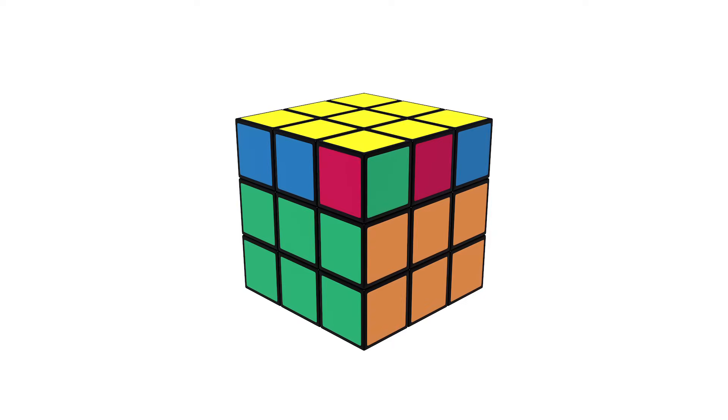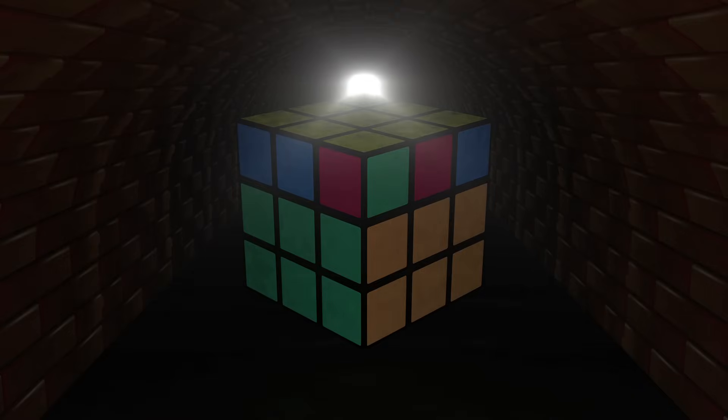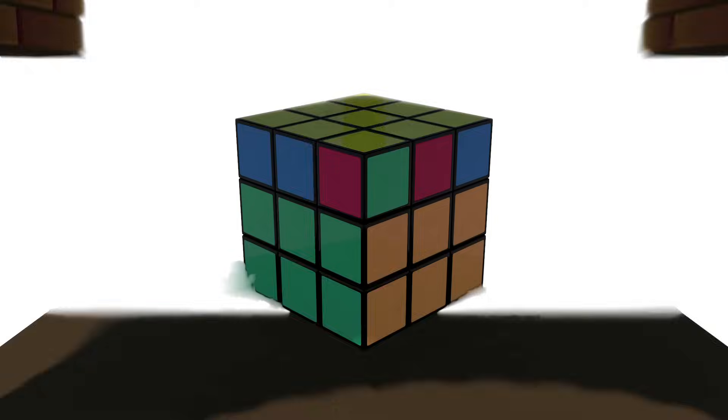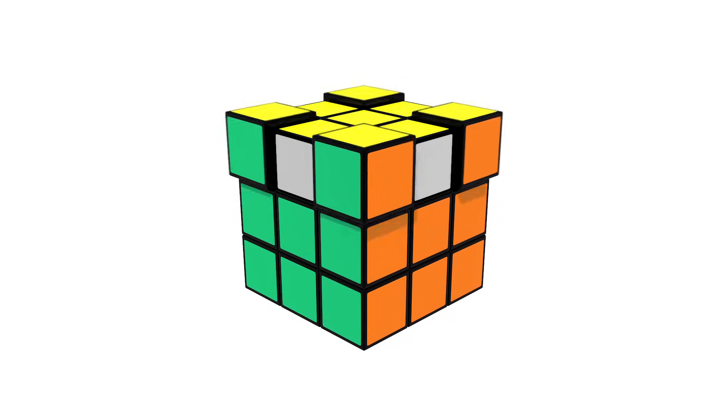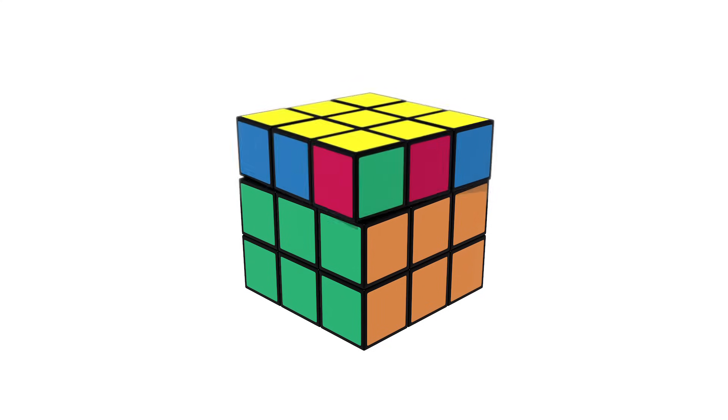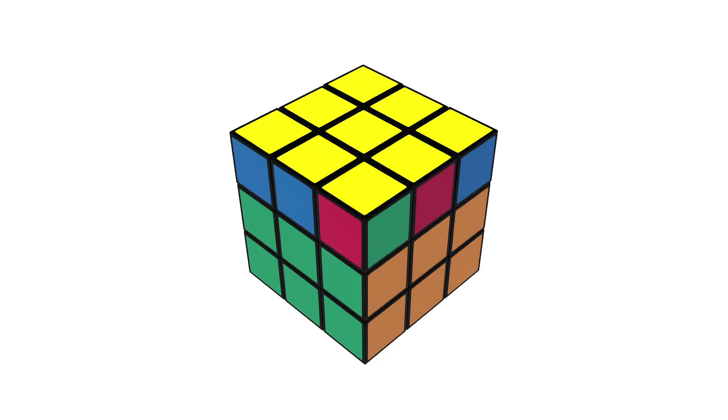Okay, you've reached stage six. You are nearly there. We can see the light at the end of the tunnel. Our goal on this stage is to have all four yellow corners in their correct position.